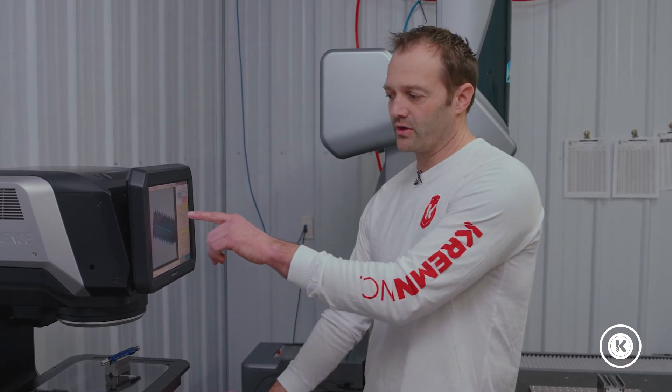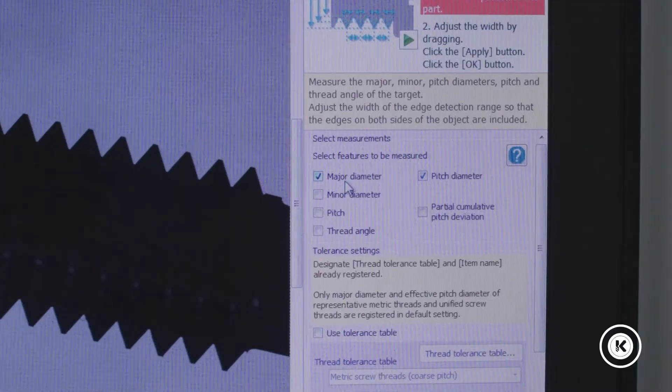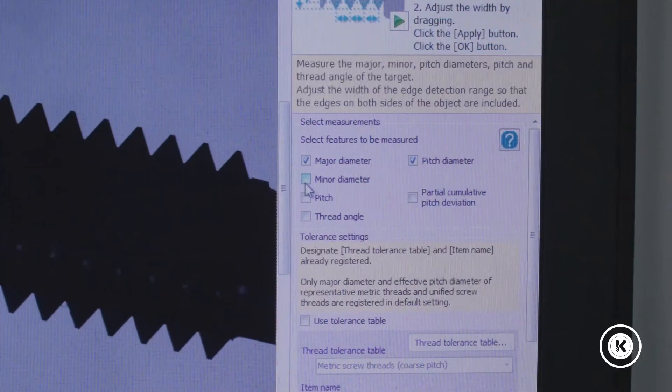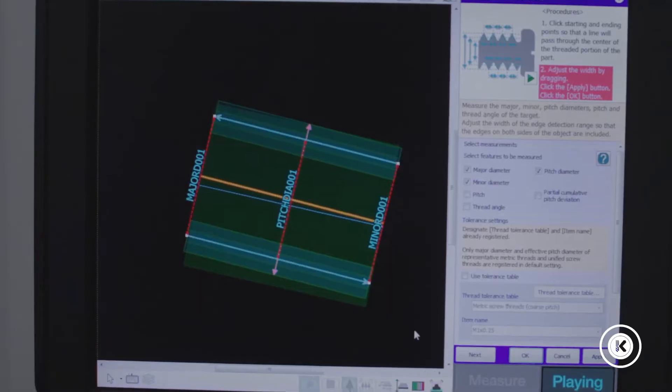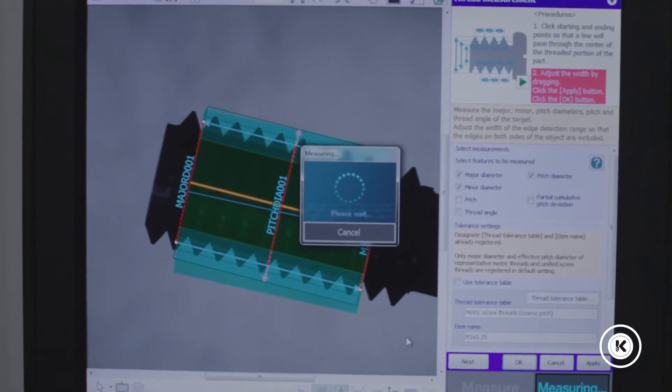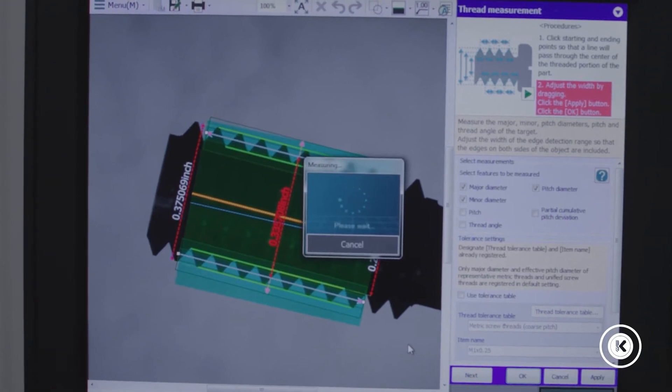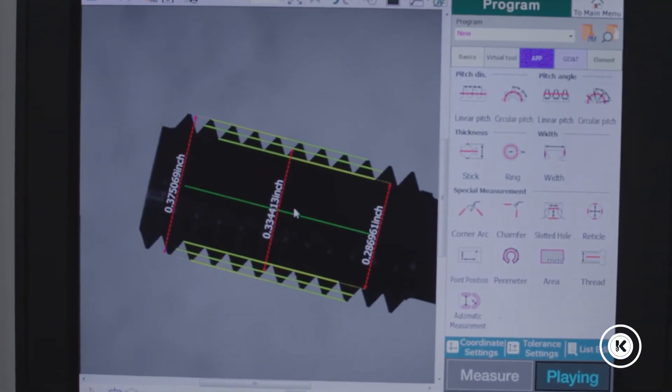We have options here for what we want to report out. We're just looking at pitch diameter, major, and minor. Hit OK. You can see it's going to report your major, pitch, minor, and this is the one we're going to focus on right now, the pitch diameter, 0.3344.